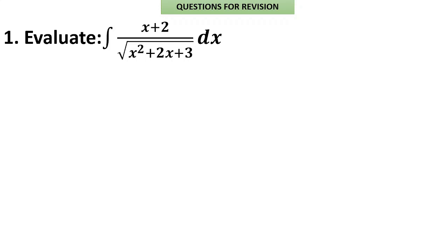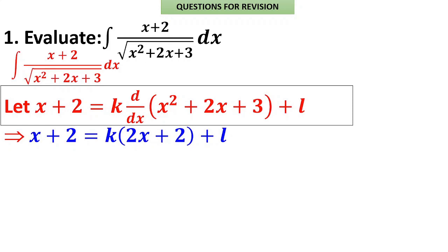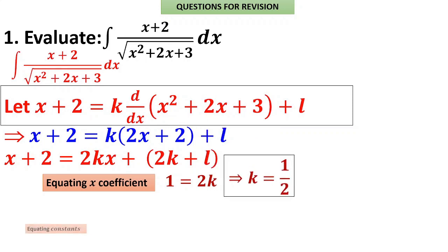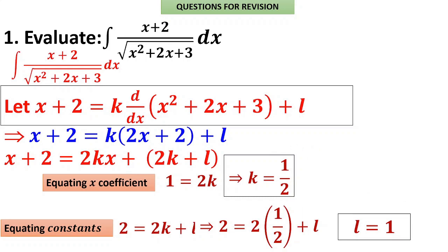Problem 1: ∫(x + 2) / √(x² + 2x + 3) dx. Take x + 2 = k · (d/dx of x² + 2x + 3) + l = k(2x + 2) + l. Collecting coefficients: x coefficient gives 2k, constant gives 2k + l. Equating x coefficients: 1 = 2k, so k = 1/2. Equating constants: 2 = 2k + l = 1 + l, so l = 1. Therefore k = 1/2 and l = 1.